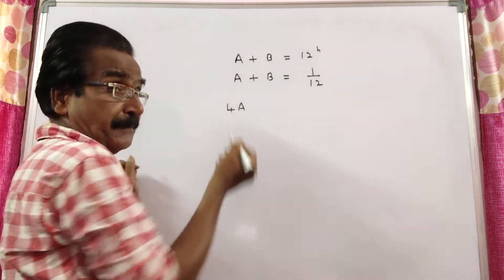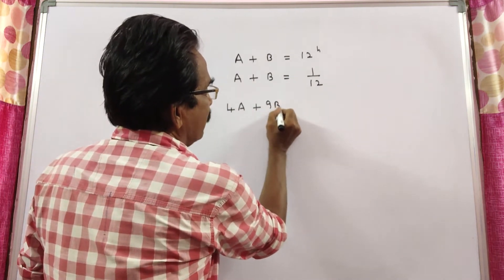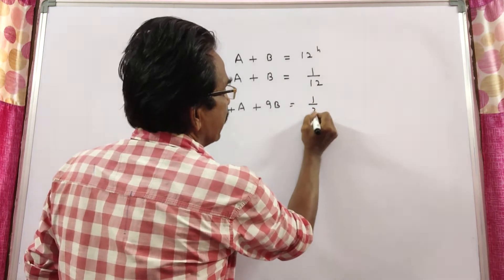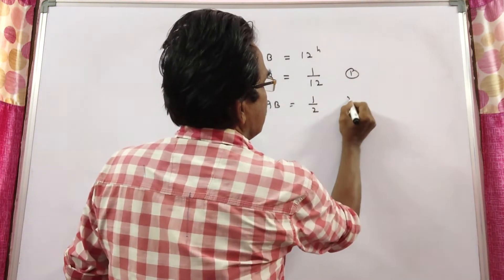If the larger pipe is used for 4 hours and the smaller pipe is used for 9 hours, then only half of the tub is filled. This is equation 1, this is equation 2.